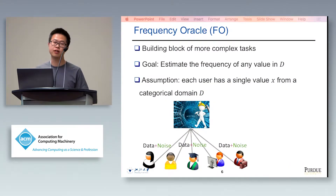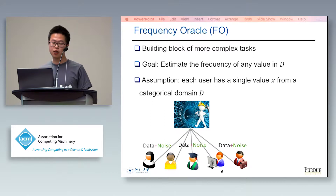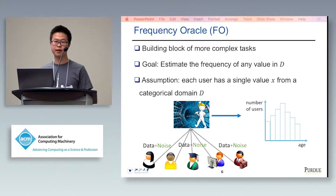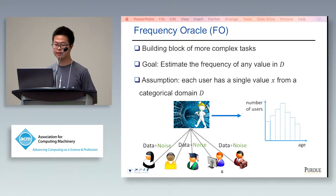Frequency Oracle is the most basic task for LDP, and it is also a building block of more complex tasks. The goal of Frequency Oracle is to estimate the frequency of any value in domain D. For example, we want to estimate the age distribution of a city. The basic assumption of Frequency Oracle is that each user has a single value X from a categorical domain D.